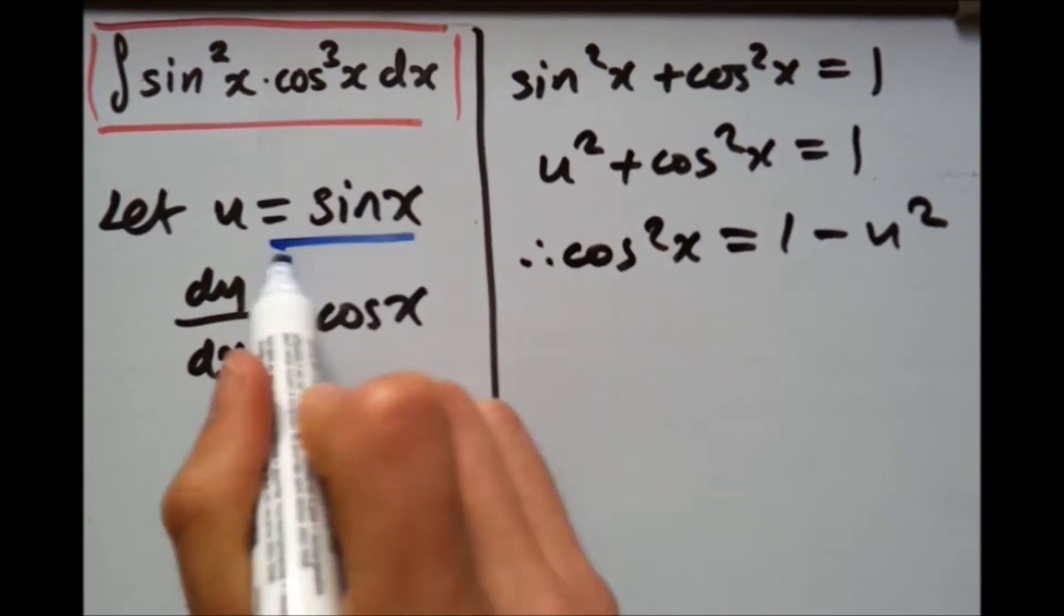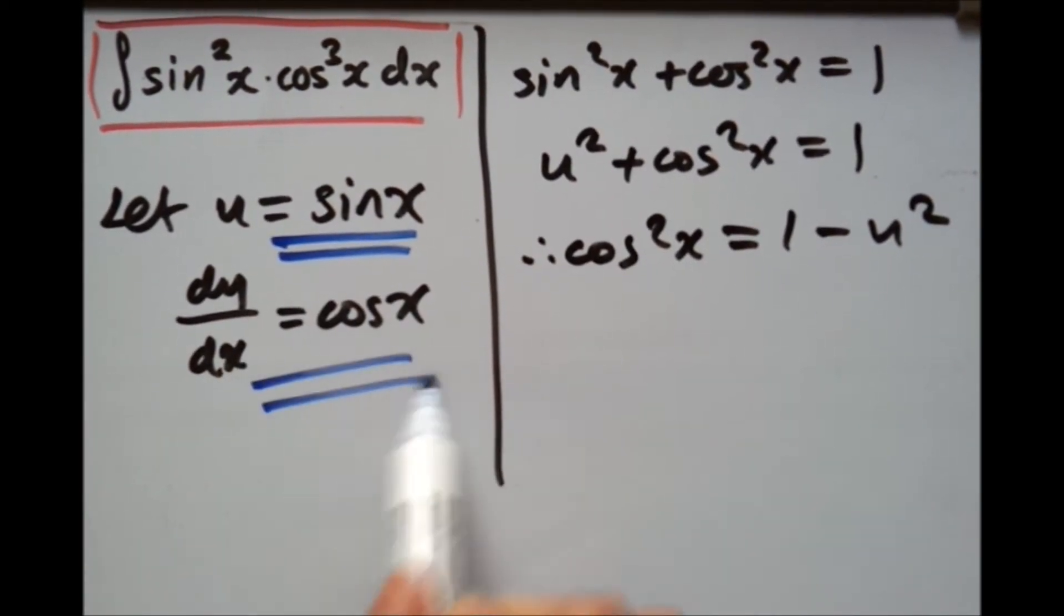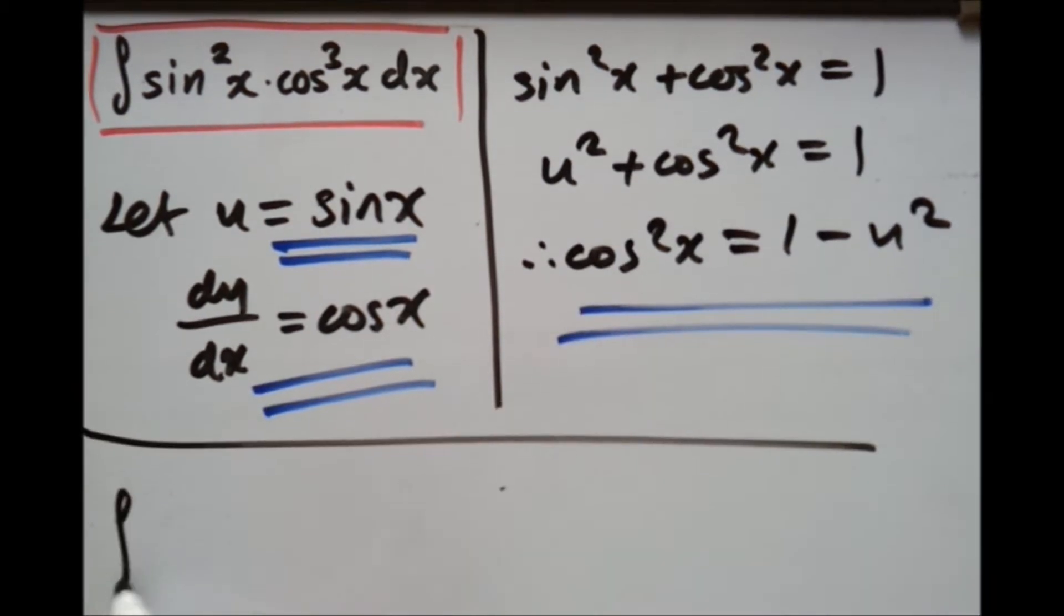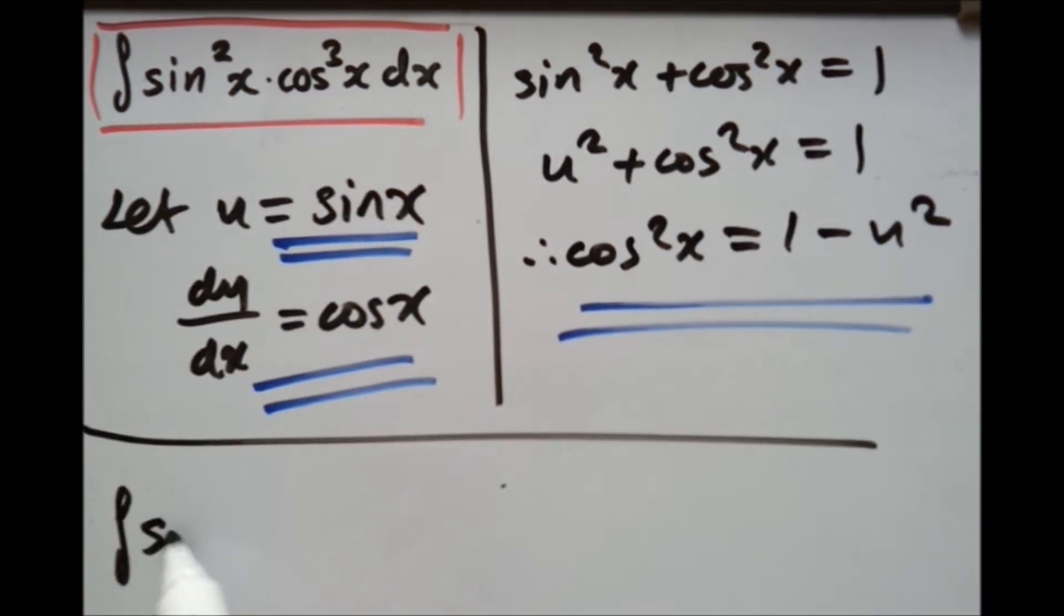So now we have what? U equals sin x, du over dx equals cos x. So first things first, sin squared x. Write that down.